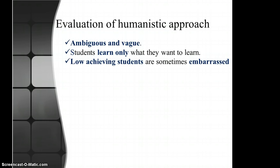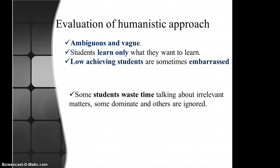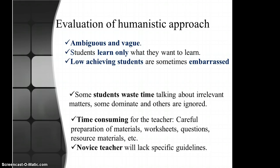Please read that on page 33 and do progress exercise 2.3. Regarding the evaluation of humanistic approaches, critics argue that it is ambiguous and vague, that students learn only what they want to learn, and that low-achieving students are sometimes embarrassed. Some students can waste time talking about irrelevant matters, some dominate while others are ignored. It is very time-consuming, and it is difficult for new teachers to cope with the lack of specific guidelines regarding the humanistic approach.